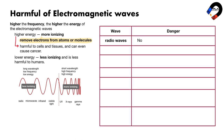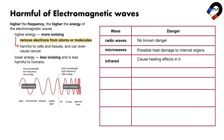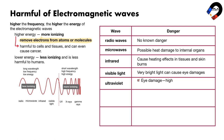The main risks: radio waves — no known danger. Microwaves — possible heat damage to internal organs when water molecules in the body absorb microwaves strongly. Infrared — can cause heating effects in tissues and skin burns, but less likely to cause internal damage than microwaves. Visible light — very bright light can cause eye damage, as the retina is sensitive to light. Ultraviolet — high levels of UV can cause severe eye damage and skin cancer, as UV is ionizing and can kill cells or cause them to malfunction, resulting in premature aging.